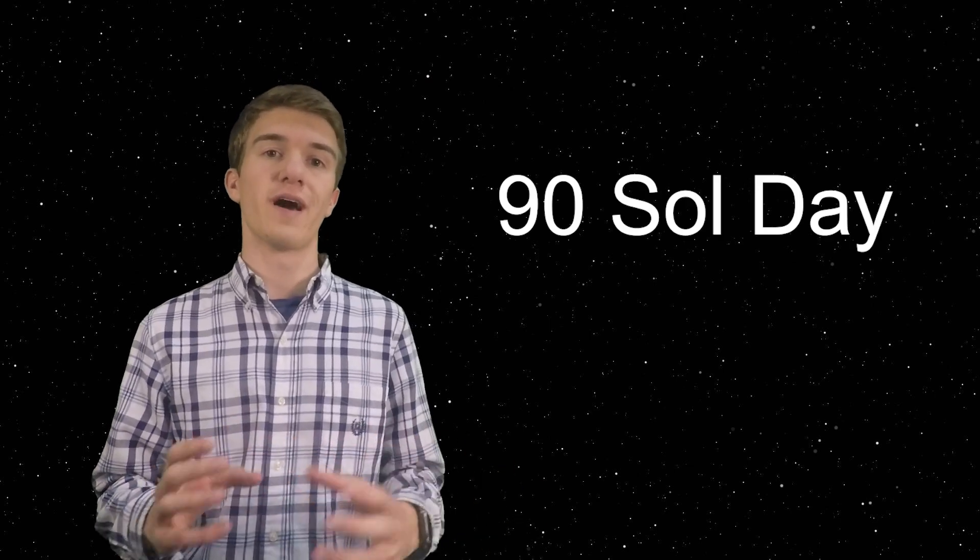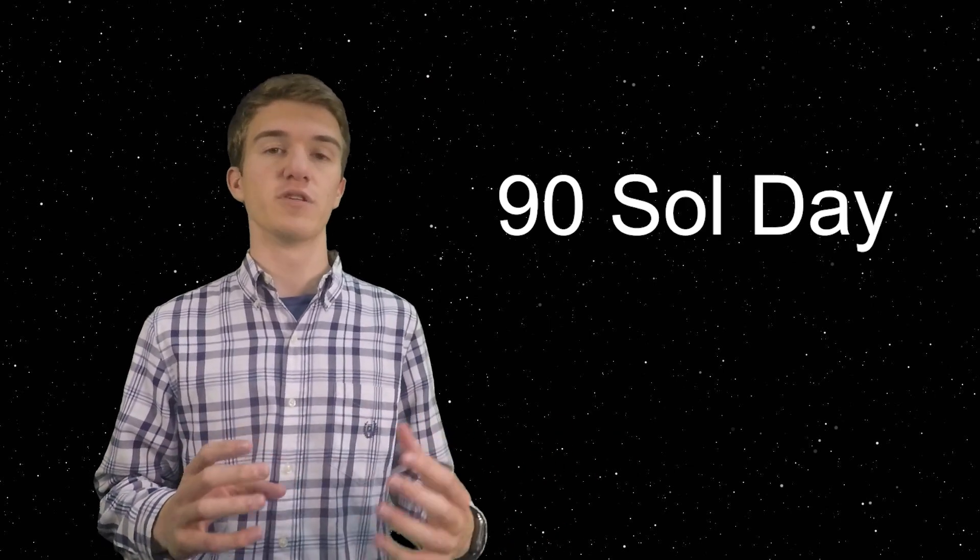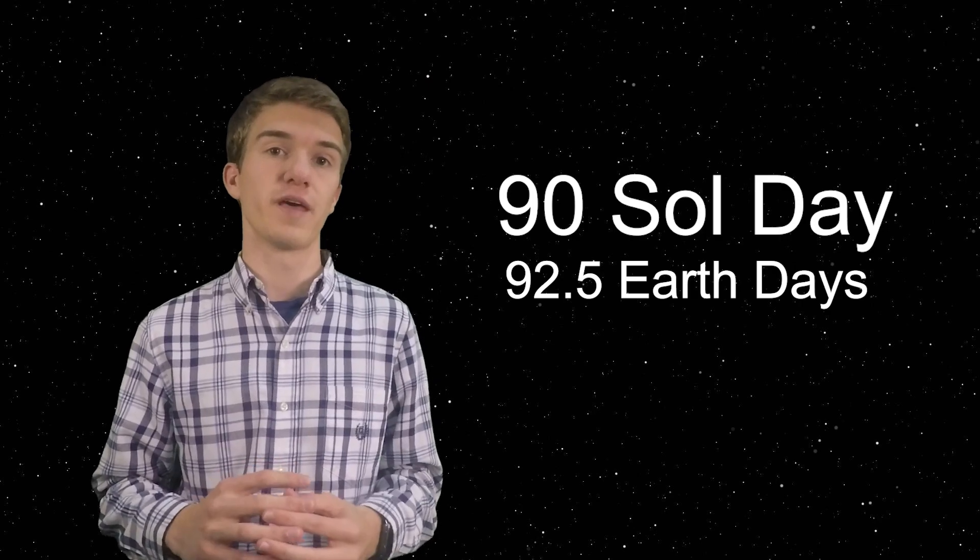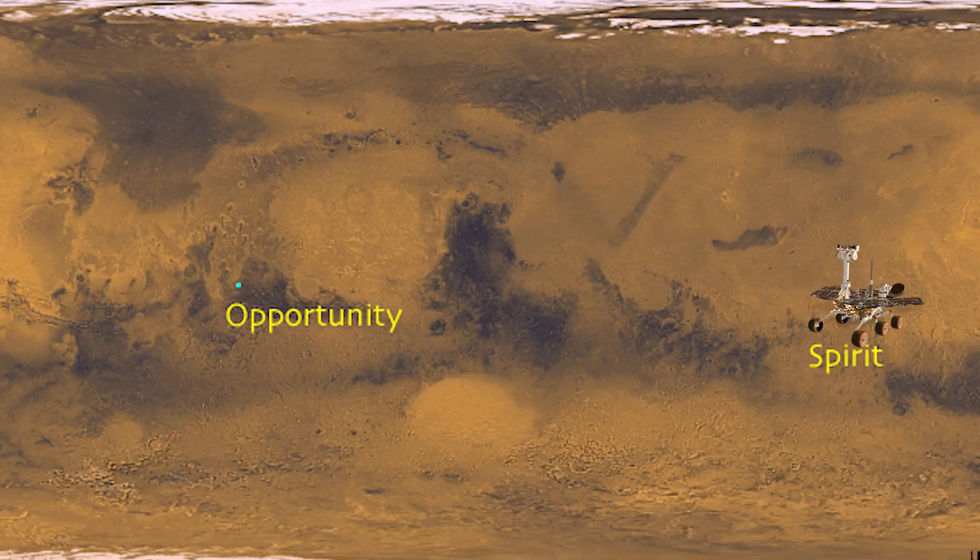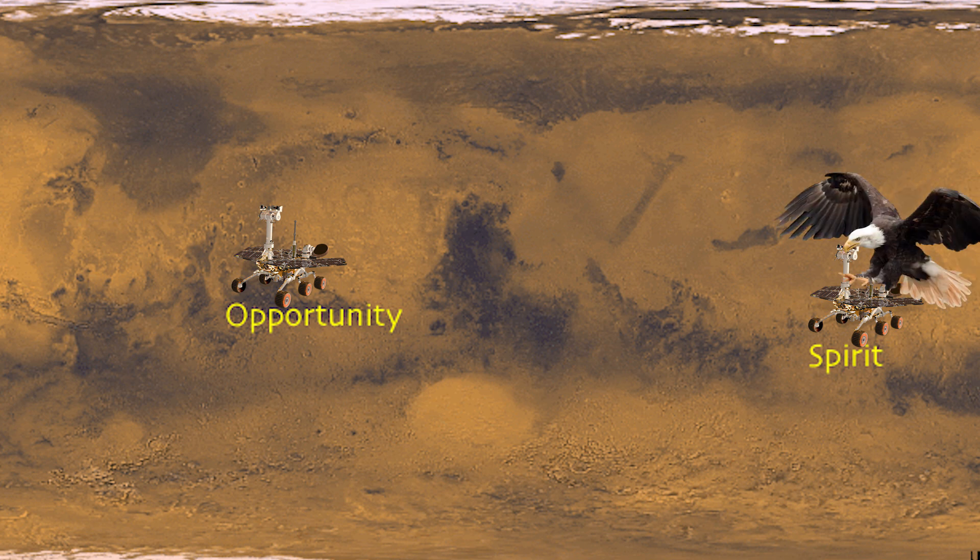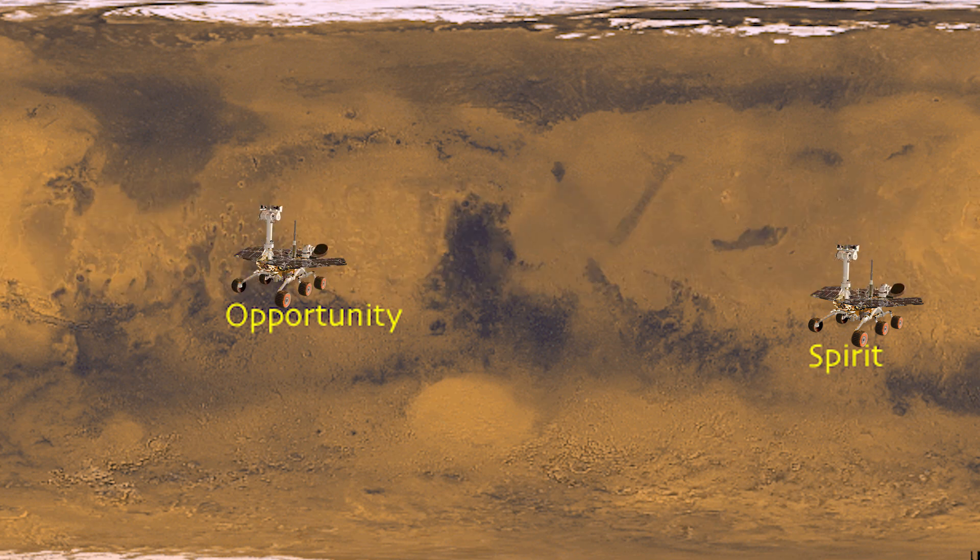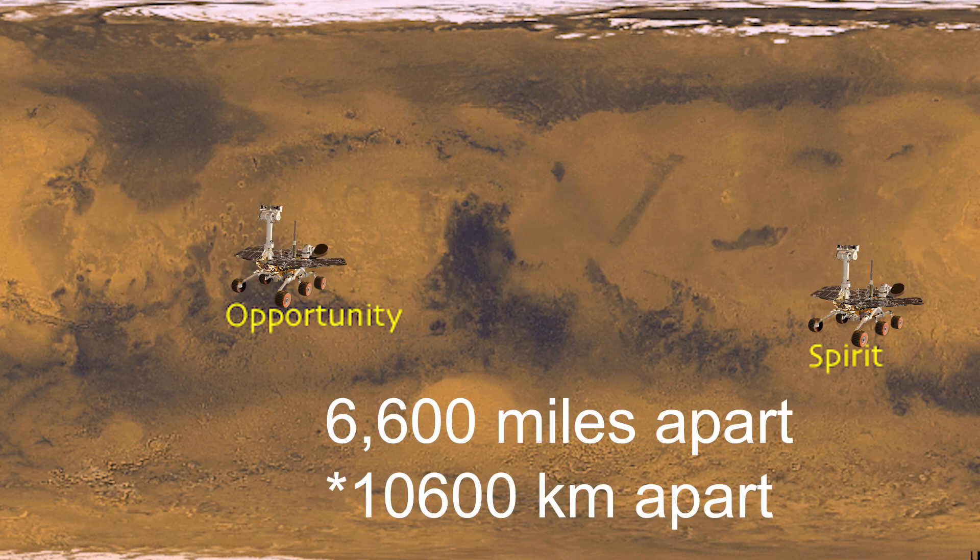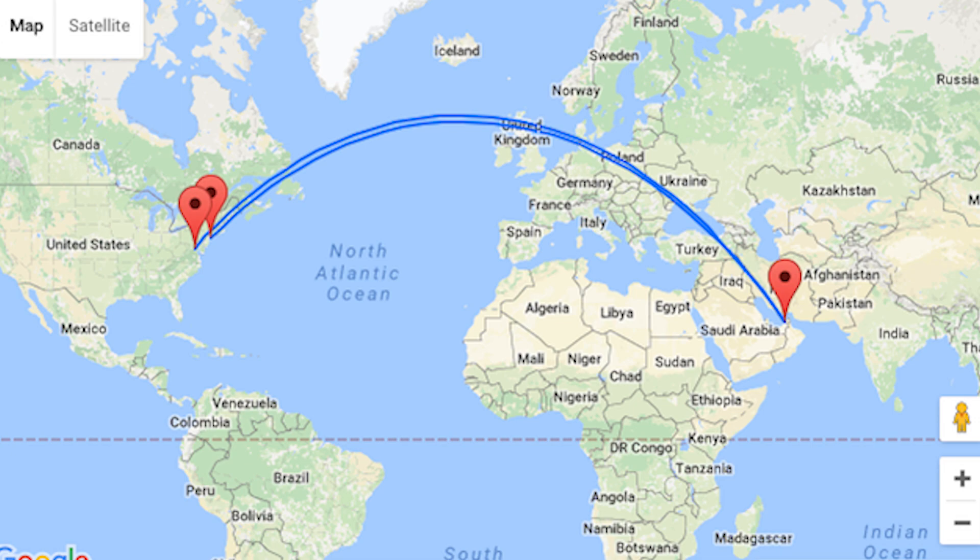Let's talk about what these two rovers had in common. Both of them were planned to have a 90 Sol day period, or 90 Mars day period, which is about 92.5 Earth days. Spirit landed in the Gustav crater, and Opportunity landed in a crater which would later be called Eagle. And these two craters are about 6,600 miles away from each other. So that's about the same distance between New York City and Dubai.